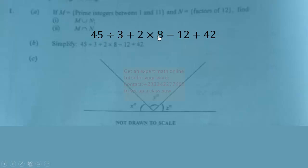We use BODMAS in solving this question, but we know division comes before multiplication, so we can divide and multiply simultaneously. So let's divide and multiply. When we divide 45 by 3, we get 15. 2 times 8, we get 16. We maintain the others: 15 + 16 - 12 + 42.